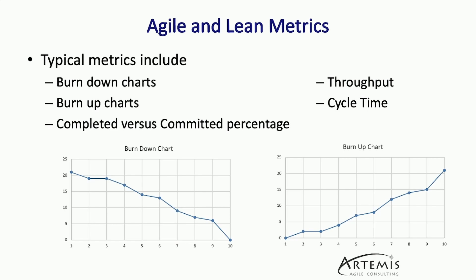A couple of good lean metrics to look at are going to be your throughput and your cycle time. Throughput is simply a measure of the number of items that were completed and delivered during that sprint. Cycle time is simply a measure of how much time it took from the moment you began working on an item until that item was completed and accepted. When you're looking at lean metrics like throughput and cycle time, one expectation is that those items are going to be about the same size, so you may need to do some normalization. This should encourage your teams to break down items into smaller pieces so that you can do more consistent delivery of value.